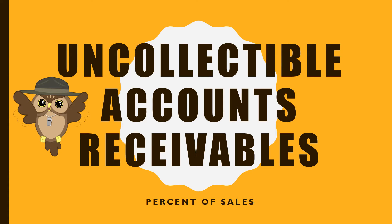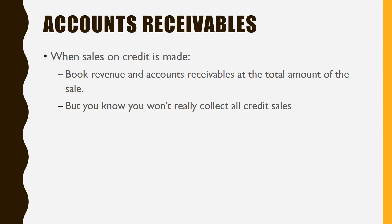This presentation talks about accounts receivable, and the only hard part about accounts receivable is the uncollectible accounts. When you make a sale on credit, you want the revenue as well as the account receivable to be the total amount of the sale. If I sell a hundred thousand dollars, I really expect my customer to pay me that whole hundred thousand dollars, but deep in our hearts we know that some of those people aren't going to pay us, or maybe they're not going to pay us the total amount.